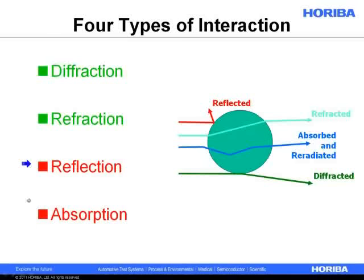The Mie scattering theory gives us an imaginary component of the refractive index that we can use to help correct for these poor light interactions. Absorption is also not good because the light is basically entering the particle or being absorbed at the surface. Worst case, it's re-emitted through fluorescence or phosphorescence; usually it gets re-radiated as infrared heat. If you're running paint pigments or carbon black, you're hitting it with light that's absorbed and re-radiated as heat. So we like diffraction and refraction; reflection and absorption work against us, but we have tools to correct for them.